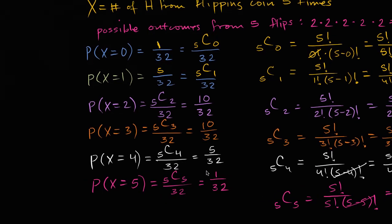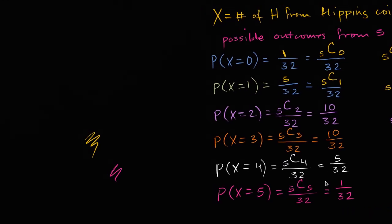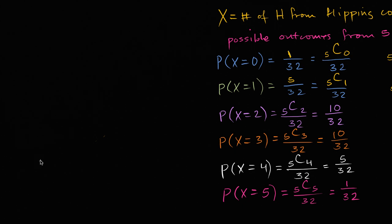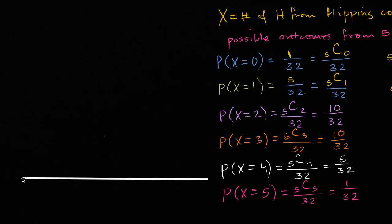Let me set up the graph. On one axis I'm going to put all of the different outcomes, and on the other axis I'm going to plot the probabilities. That looks like a pretty straight line for each axis.